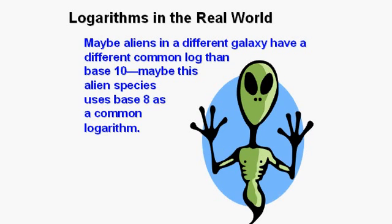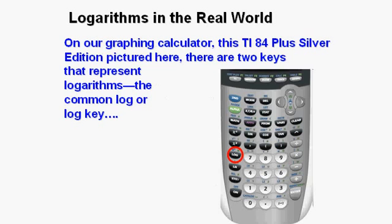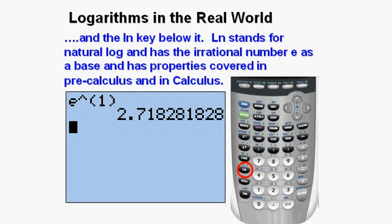On our graphing calculator, this TI-84 plus silver edition whose keypad is pictured here, there are two keys that represent logarithms: the common log, or log key, and the ln key below it. ln stands for natural log and has the irrational number e as a base and has properties covered in pre-calculus and in calculus.